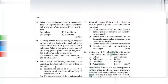If the secretion of parietal cells of the gastric glands is blocked with an inhibitor, HCl secretion will be absent. As a result, the inactive pepsinogen will not be converted into the active enzyme pepsin.